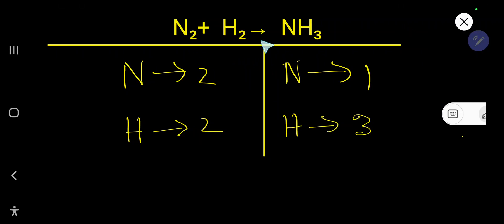How to balance N2 + H2 that produce NH3. So here 2, here 1. So to balance nitrogen you can multiply simply here by 2. That gives you 2.